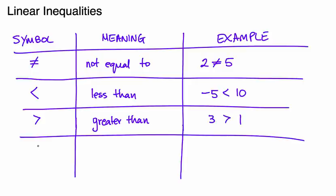And the last two symbols combine these. One is this symbol, which means less than or equal to. And examples could be 2 is less than or equal to 2 because 2 is equal to 2, or you could have 2 is less than or equal to 10 being a true statement because 2 is less than 10.